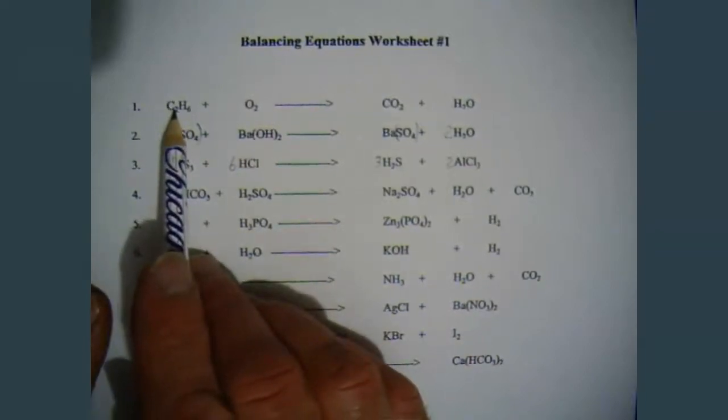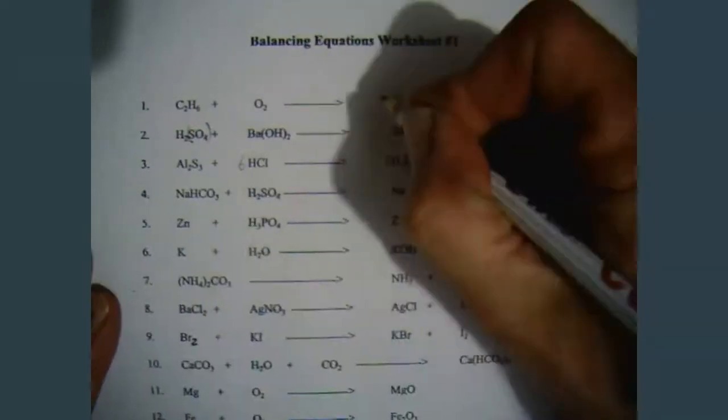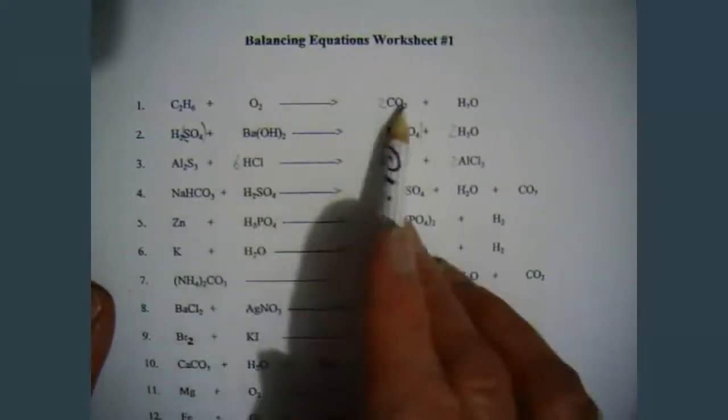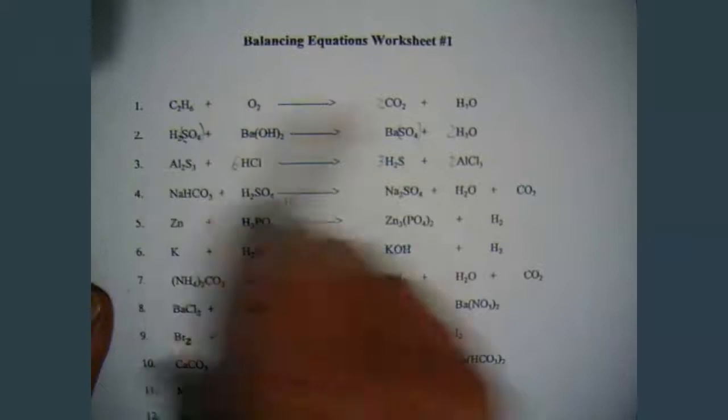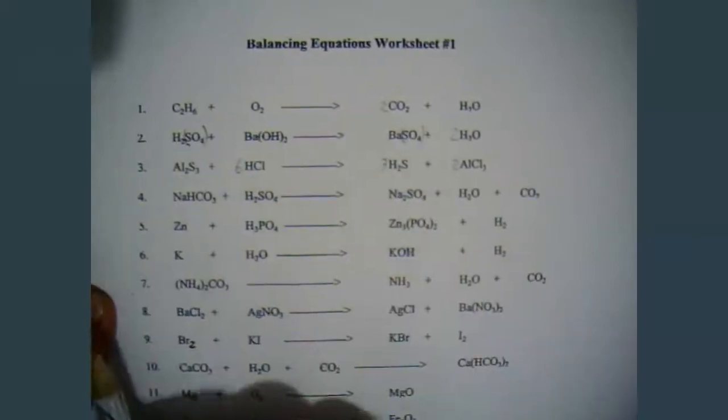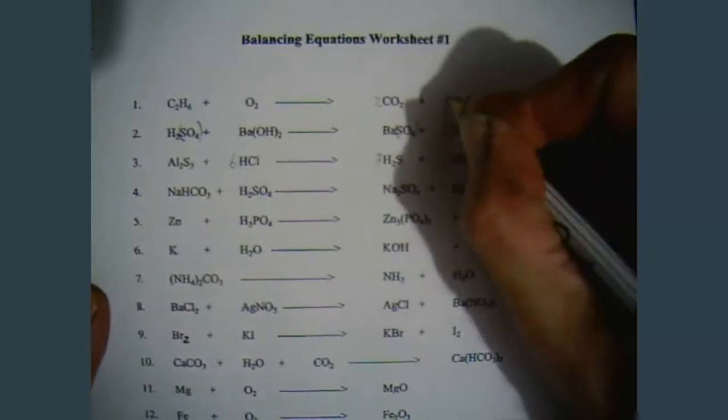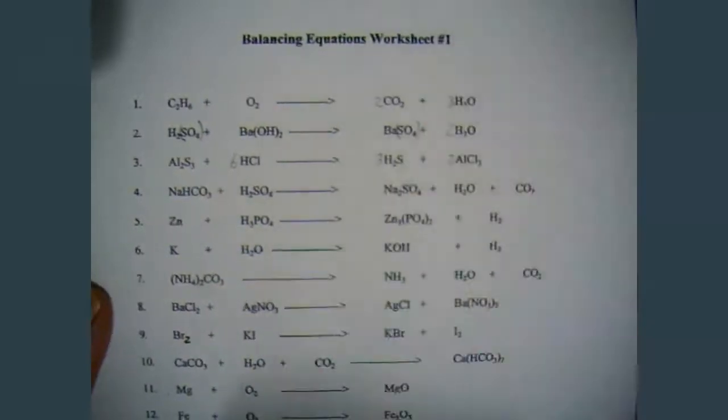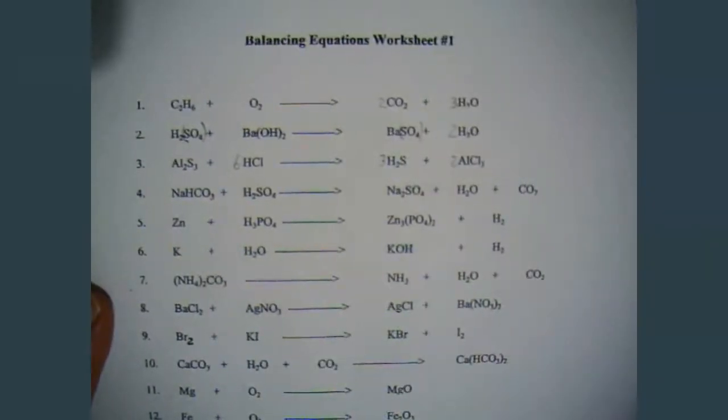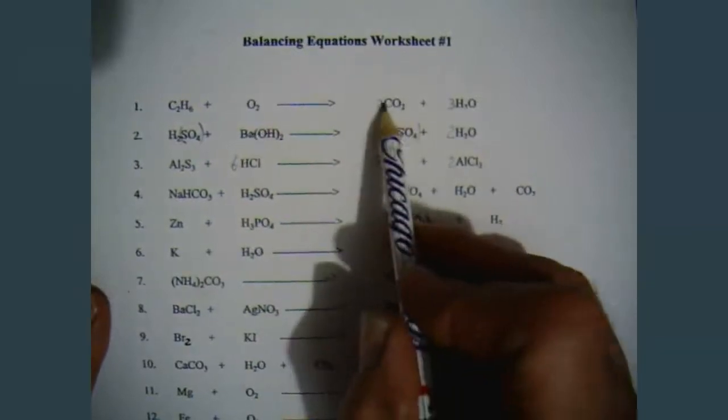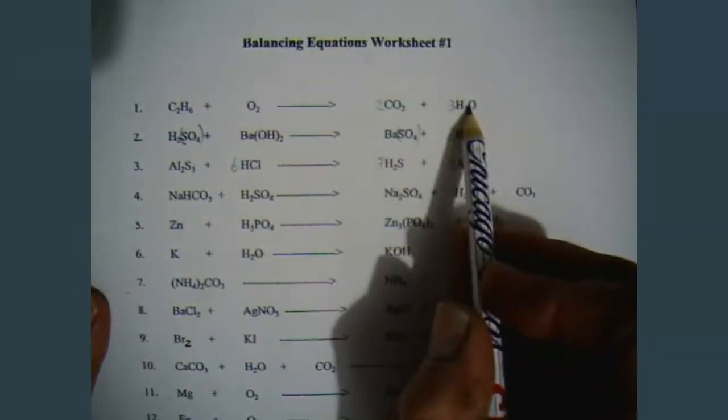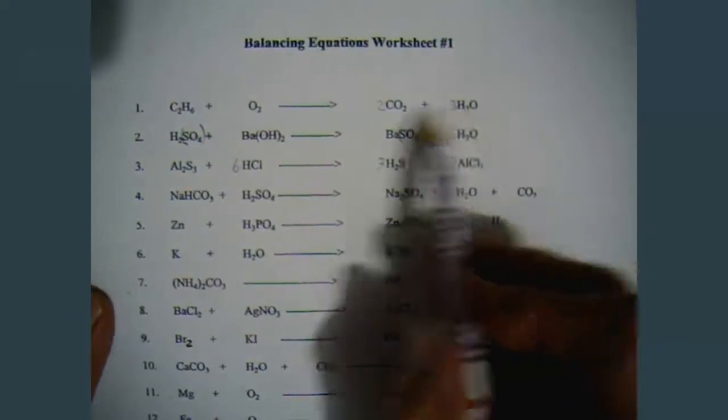So on this side, we have two carbon. On this side, we need two carbon. Now oxygen shows up once on the left, twice on the right. Hydrogen shows up once on the left, once on the right. So we want to balance the hydrogens first. So we have six hydrogen. So putting a three in front of the water gives us six hydrogen on the right. Now two times two is four, plus three is seven. We need seven oxygen on the left because we have seven oxygen on the right.